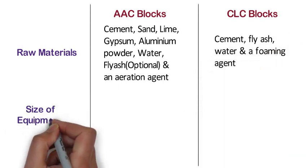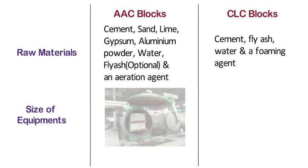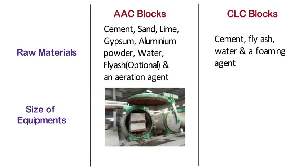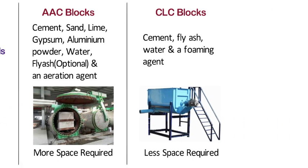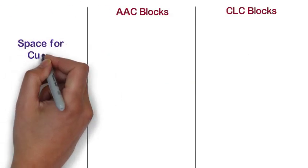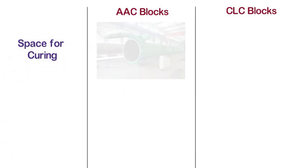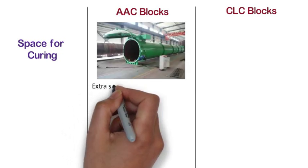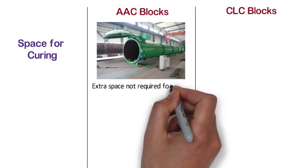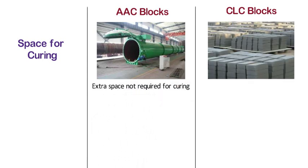Size of equipment required. Manufacturing of AAC blocks requires large equipment, and hence a considerable amount of space is required to accommodate them. Whereas, the equipment needed for manufacturing CLC blocks is smaller in size compared to AAC blocks, and hence requires less space. Space required for curing: AAC blocks are steam cured inside the autoclave and after that they are ready to be used, so no extra space is required for curing. Whereas, CLC blocks require a large amount of space for curing.